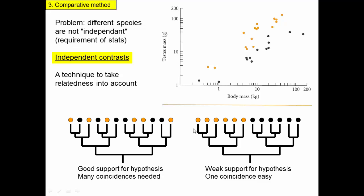On the other hand, if all the polygamous species were related to each other and all the monogamous species were related to each other, then maybe it all goes back to one case where one ancestor was polygamous with large testes, and another was monogamous with smaller testes, and that was simply inherited by all descendants. A single coincidental difference could create the same pattern. Independent contrasts statistically tests which of these two scenarios is actually happening, so that relationships don't mess up the analysis.